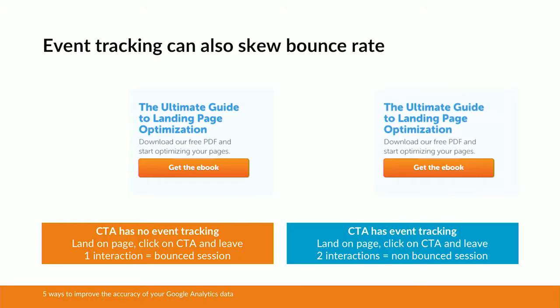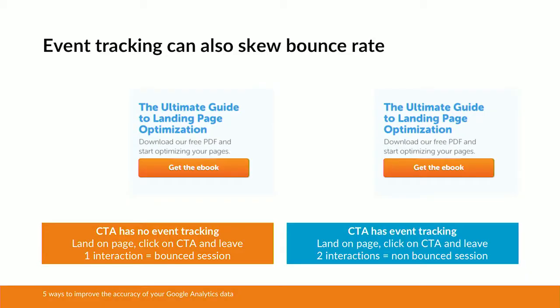Now let's assume pretty much everything's exactly the same, but the difference is we're going to event track the button — which makes sense because one key question we want to know is how many downloads are we getting on our ebook. By adding that event tracking code onto the page, that very same user journey now sees Google Analytics recording two interactions: the page view on landing, but also the click on the button from the event tracking. They're going to be classed as a non-bounce session, so that's another way how bounce rate can be artificially skewed.